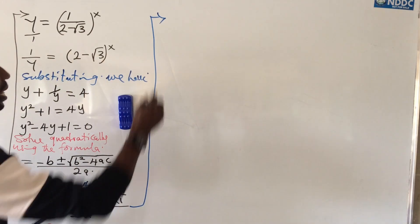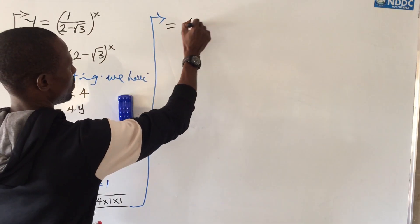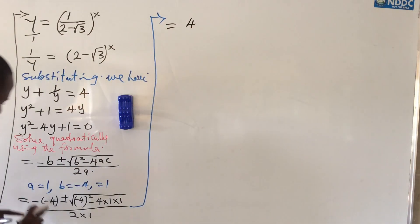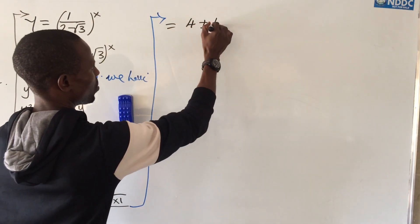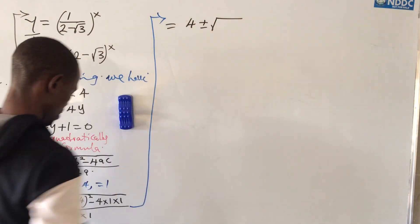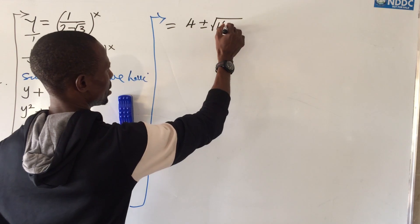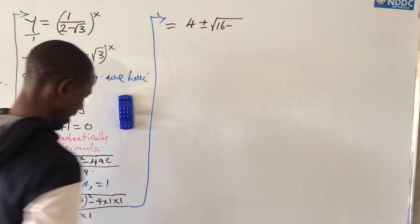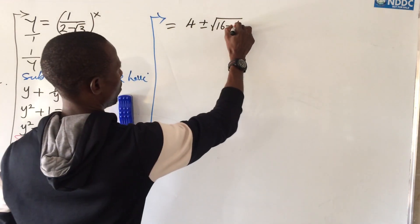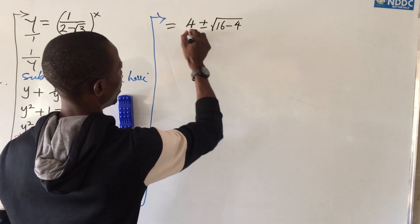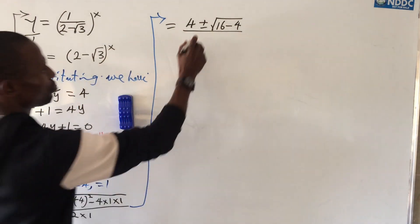The minus times minus gives us plus 4. On this side, plus or minus the square root of 16 minus 4, all over 2.